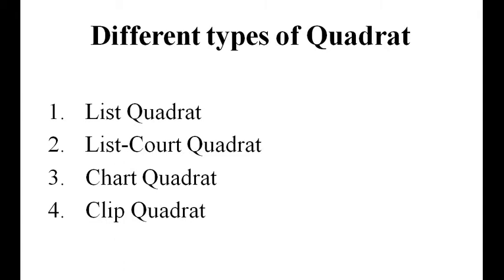In Chart Quadrat, the records show the position and areas covered by bunches, mats, or tufts of grasses and mosses on coordinated or graph paper. These graphs help to compare any change in structure of community in the future.